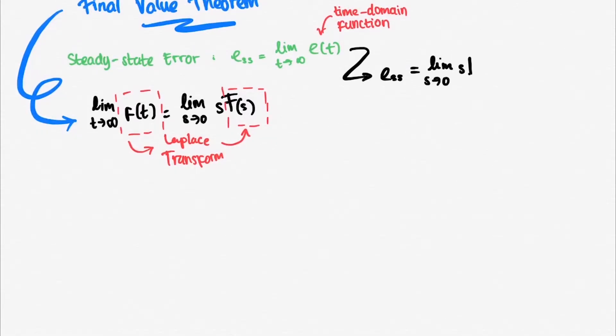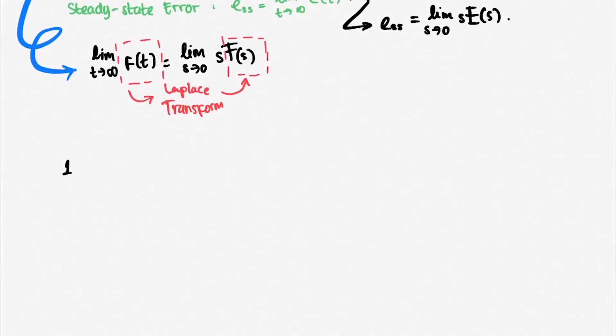So, if our steady-state error is limit towards infinity of e of t, then, in the frequency domain function, our steady-state error becomes limit towards 0 of s e of s.